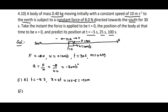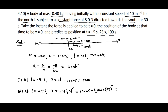At t equals 25 seconds, the position x equals ut plus half at squared, which equals 10 into 25 minus half into 20 into 25 squared. That equals 250 minus 6250, which gives minus 6000 meters, or minus 6 kilometers. This means the body is 6 kilometers towards south. The body first travels some distance towards the right and then comes back.